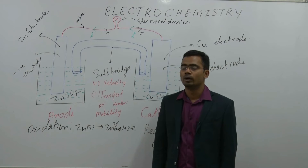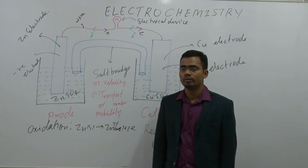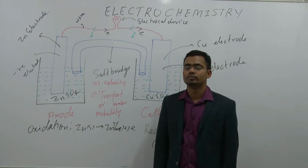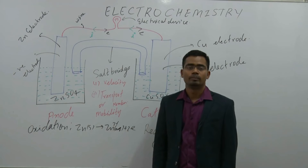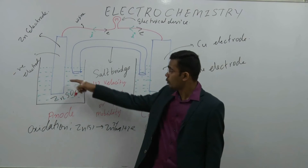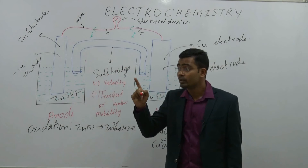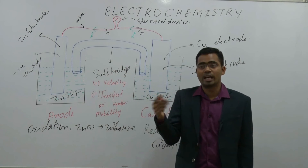The sum of transport numbers for any solution will always be equal to 1. Current will flow through the ions, so the electrolyte must have the same transport number so that the same current flows. If you use KCl, potassium and Cl both have the same transport number.